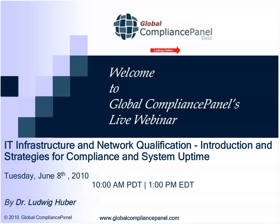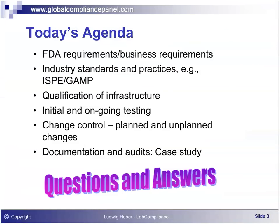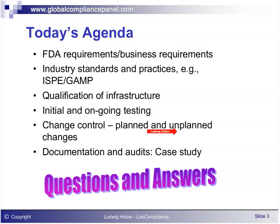Moving to the next slide, this shows today's agenda. I will start the presentation by giving you a couple of good reasons why we do all this, and also an overview of regulations, guidelines, and — very importantly — inspection findings. Next, I will give an overview of current industry practices and organizations that have developed guidance documents like the GAMP. Then a step-by-step procedure for network qualification, including initial testing, ongoing testing, and change control to handle changes in a controlled manner — both planned changes and unplanned changes. A typical example of unplanned changes are security patches received from time to time.